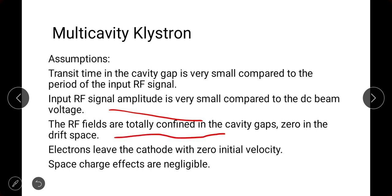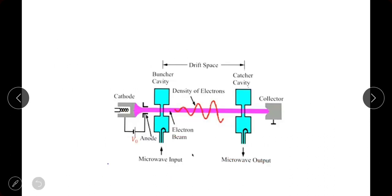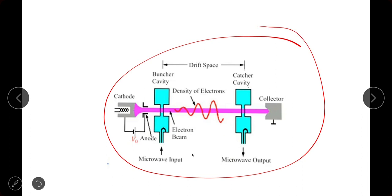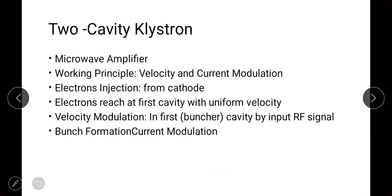Third assumption: the RF fields are totally confined in the cavity gaps — zero in the drift space. Fourth assumption: electrons leave the cathode with zero initial velocity. Fifth assumption: space charge effects are negligible. The working principle of the two-cavity klystron is velocity modulation and current modulation. Electrons are injected from the cathode.